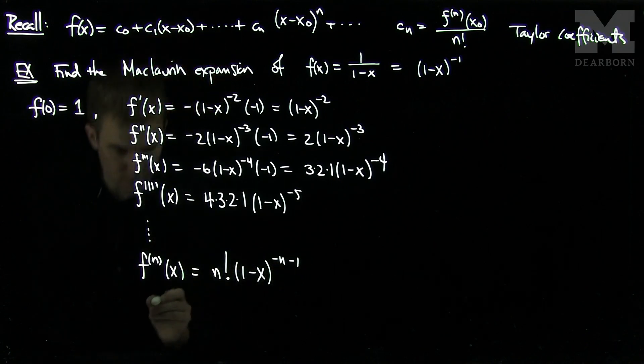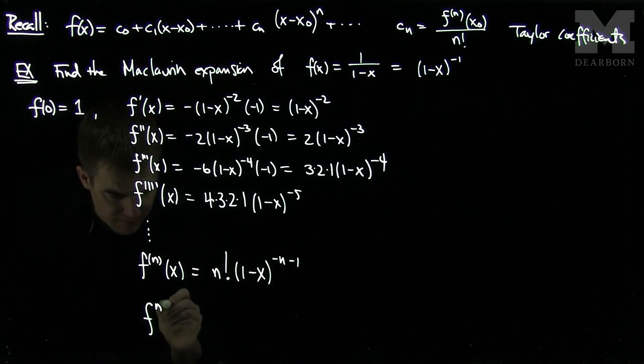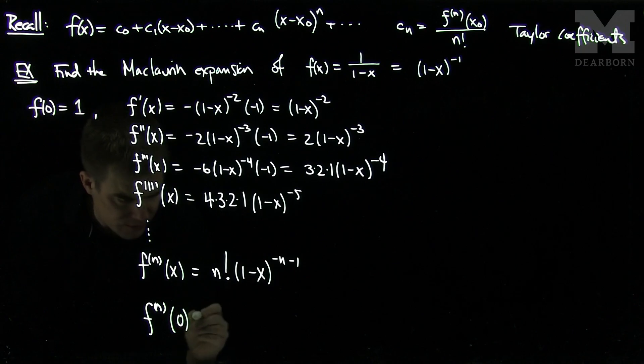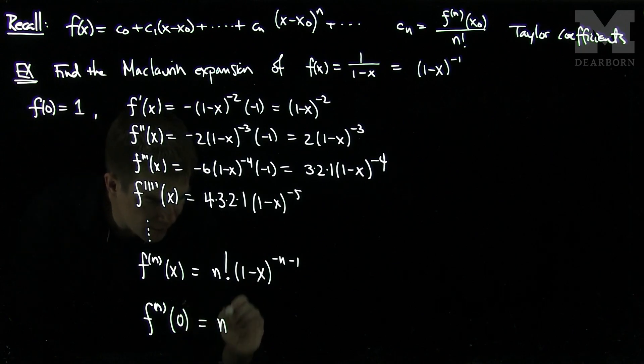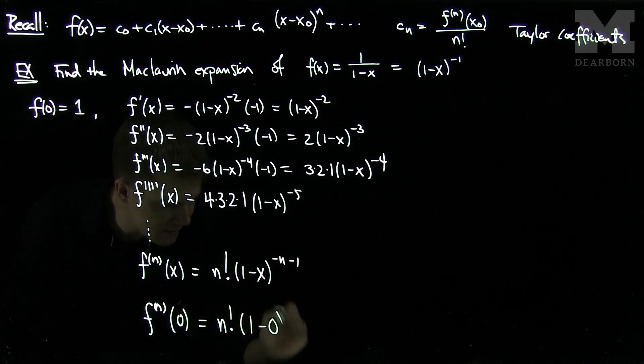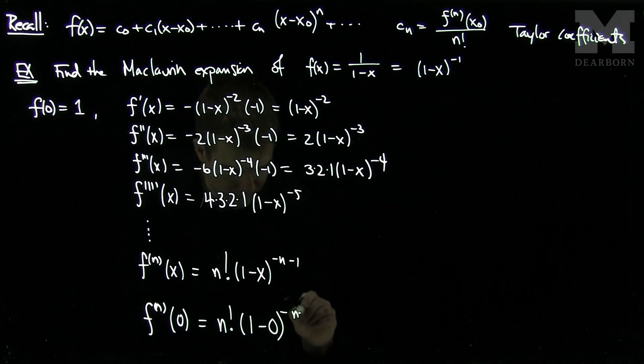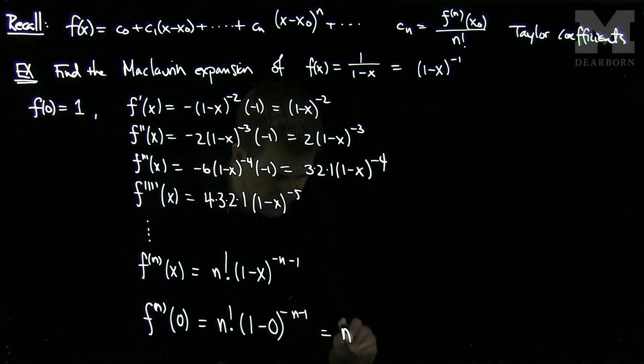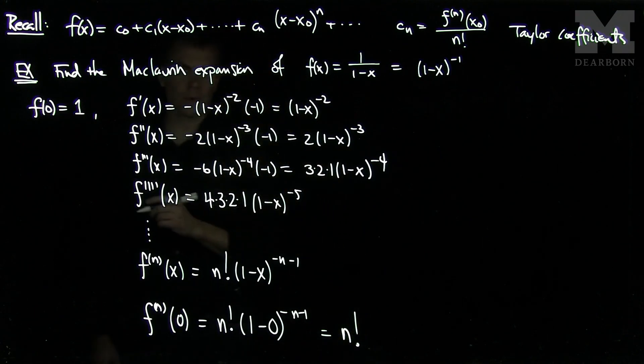Now in particular, this tells me that f to the n of 0 will be n factorial times (1 minus 0) to the negative n minus 1. So no matter what n is, this will just be n factorial. So n factorial is the general formula.